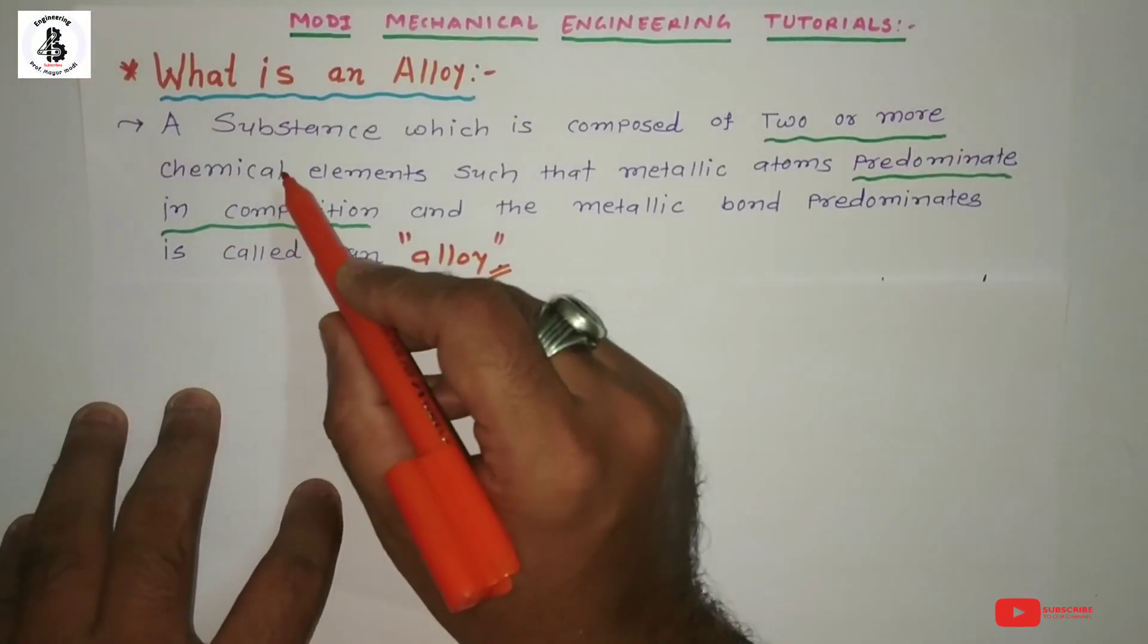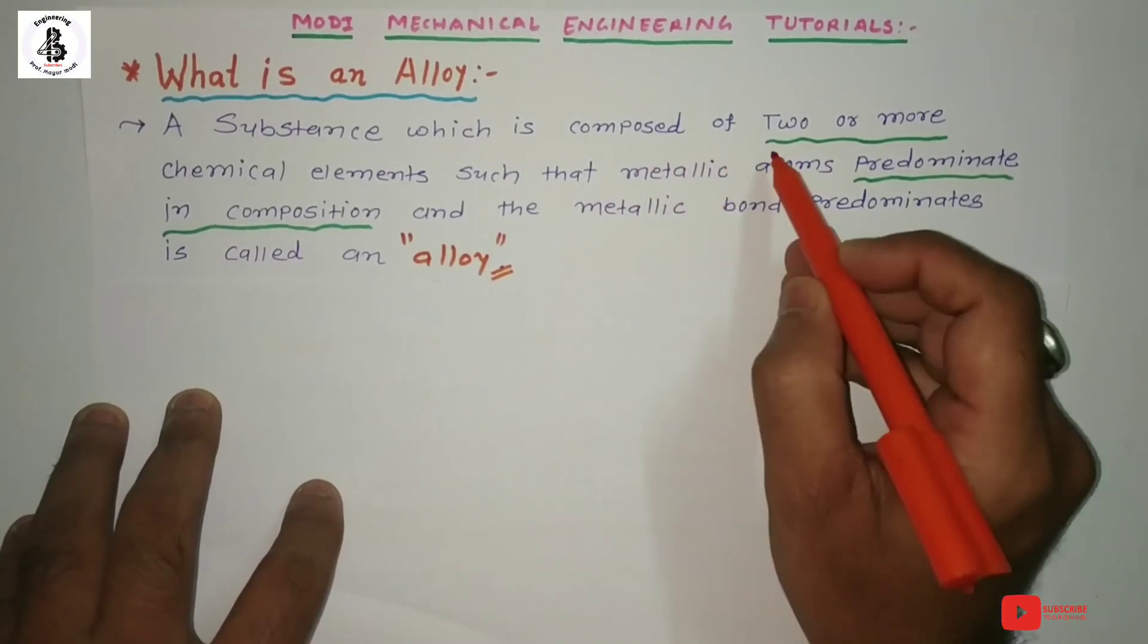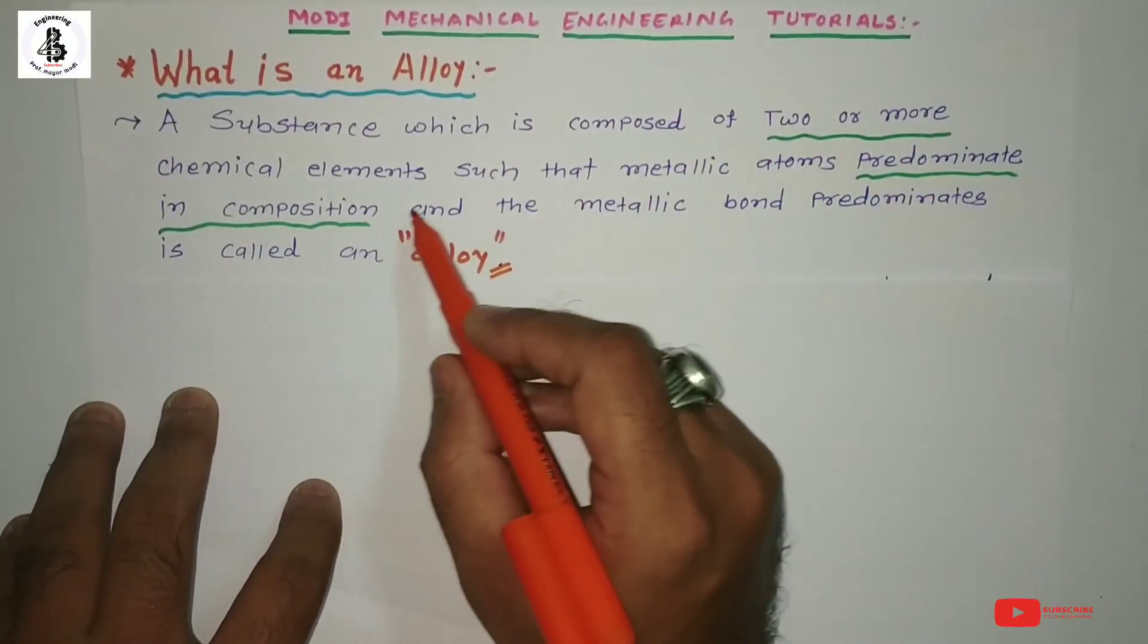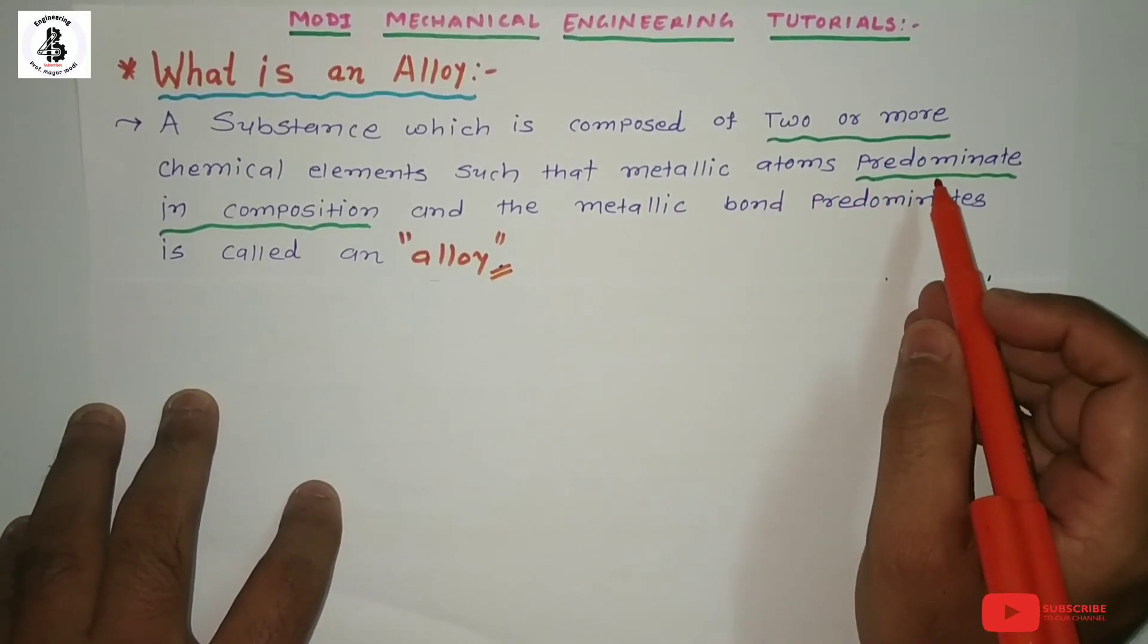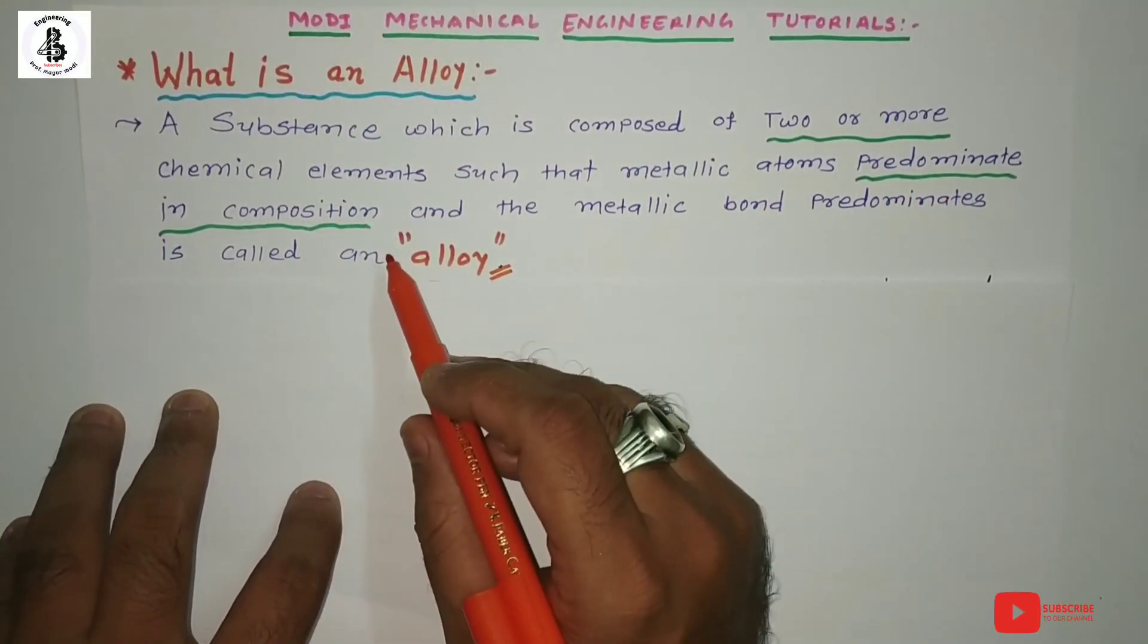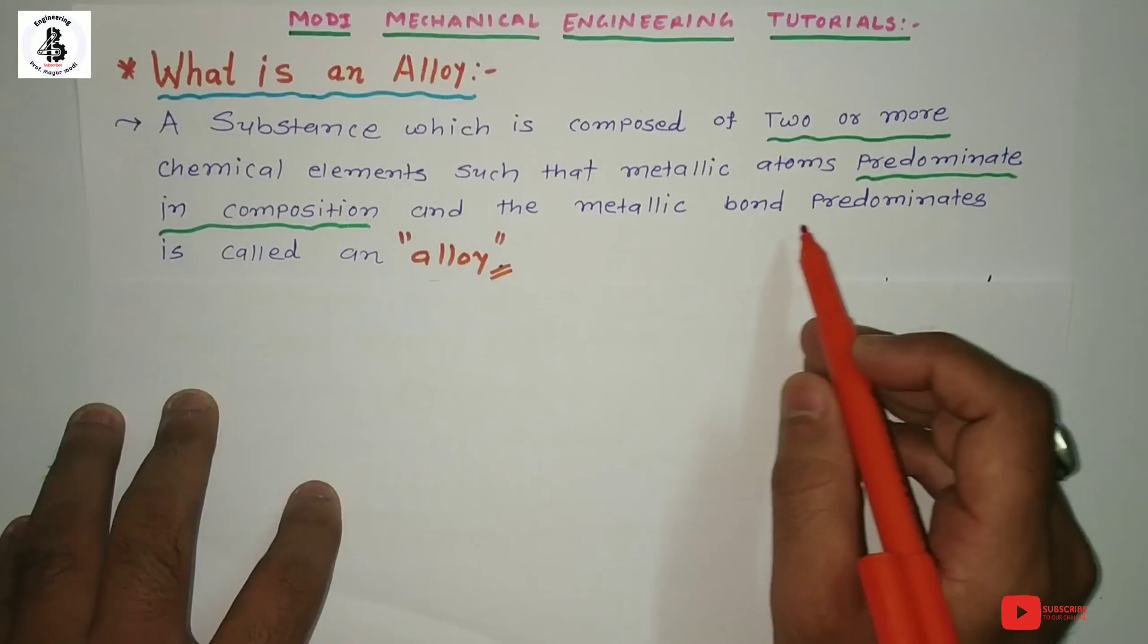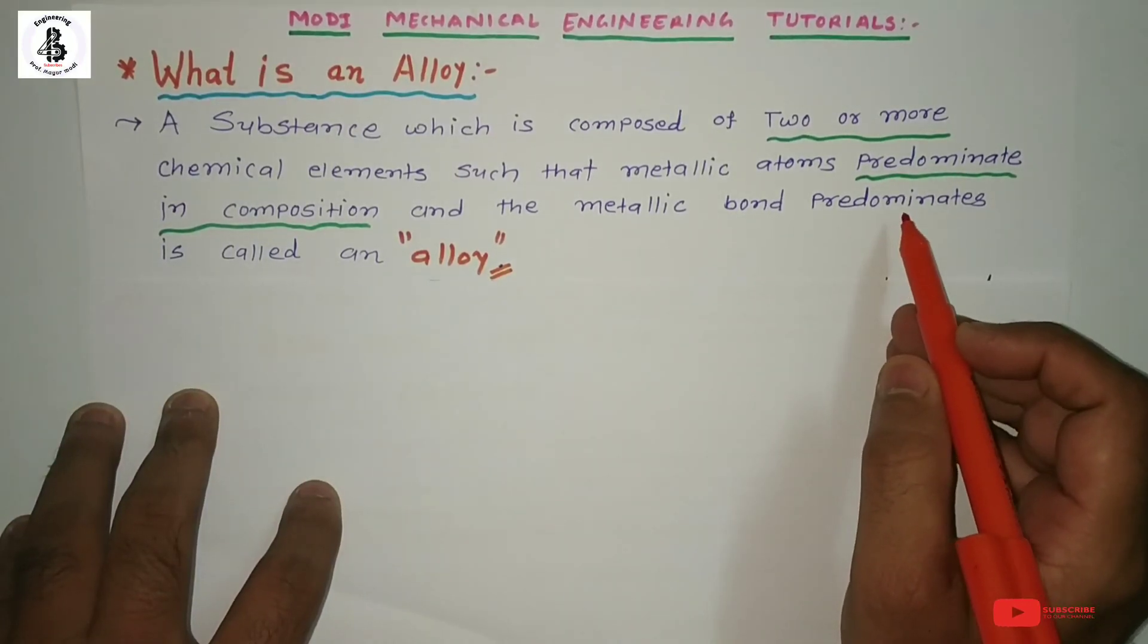A substance which is composed of two or more chemical elements such that metallic atoms predominate in composition and the metallic bond predominates is called an alloy.